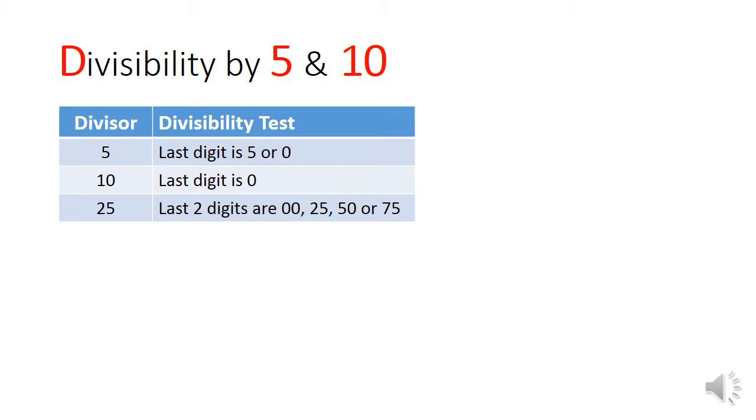For divisibility by 5 or 10, checking the last digit will do. Anything with a last digit of 5 or 0 is divisible by 5, and only a last digit of 0 will be divisible by 10.